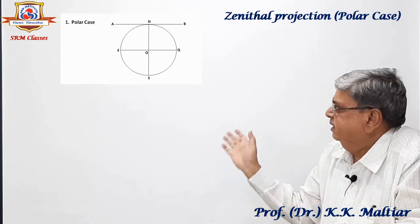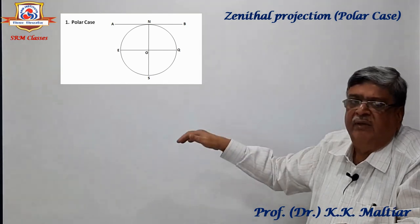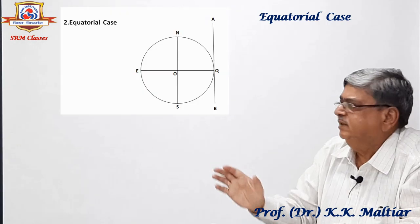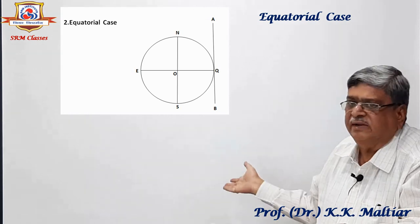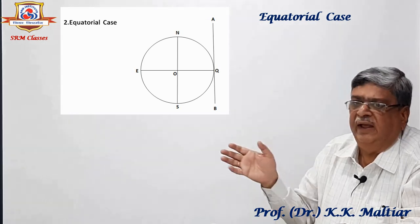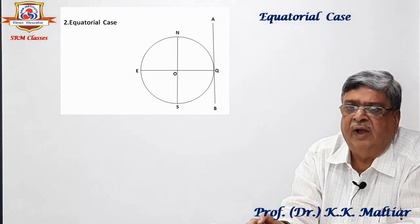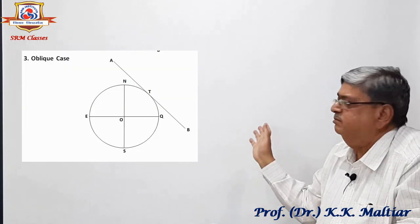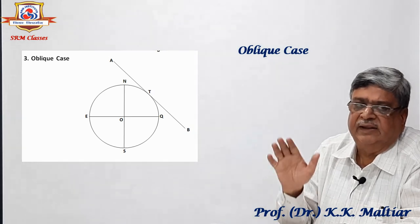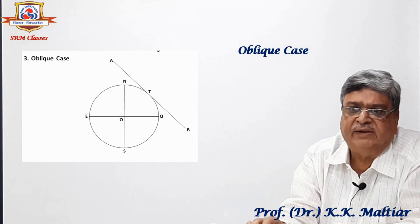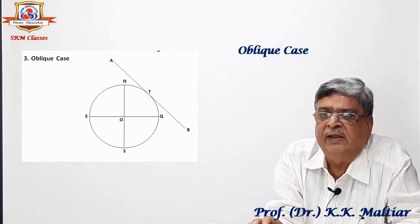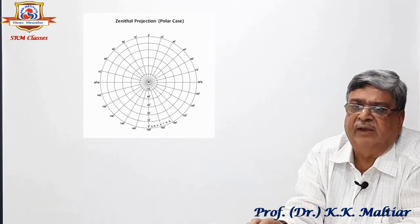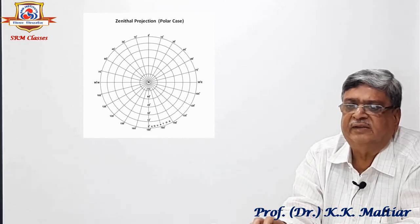In the polar case of zenithal projection, the flat sheet of paper is touching at the north pole N, with light kept at the center. In the equatorial case, the paper is touching at a point on the equator, with light at the center. In the oblique case, the paper is touching between the pole and the equator, with light again kept at the center. When shadows are noted and the paper is withdrawn, concentric circles of parallels are developed in this type of projection.